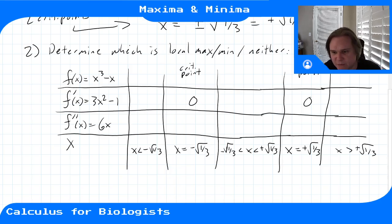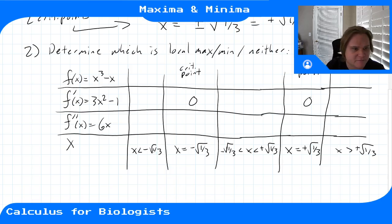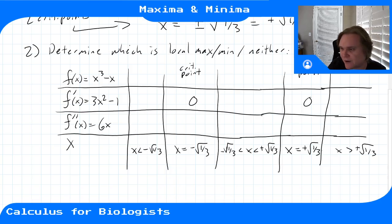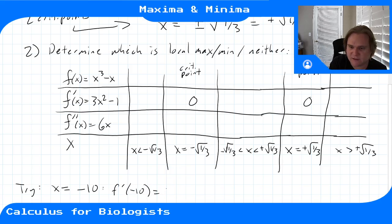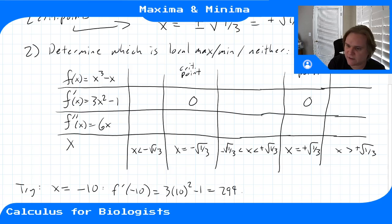For x < -√(1/3)—which is somewhere between -1 and 0—let's try x = -10. f'(-10) = 3(10²) - 1 = 3(100) - 1 = 299. That's a positive number, so f is increasing there.